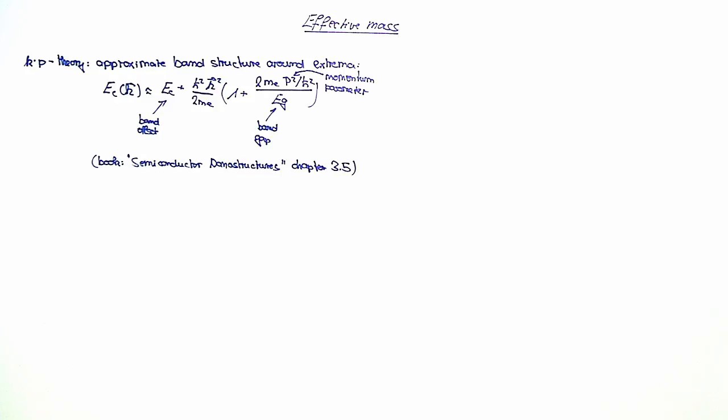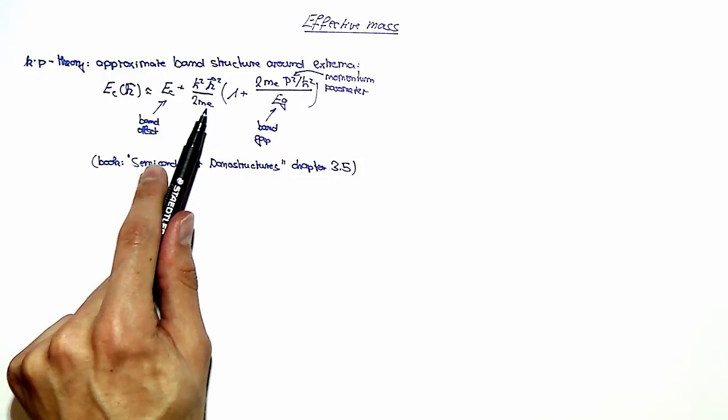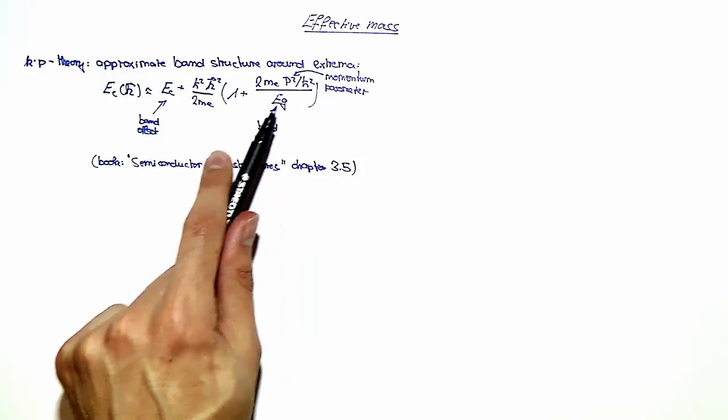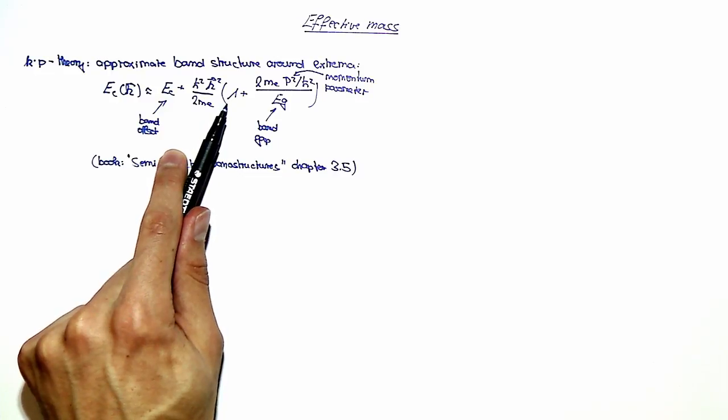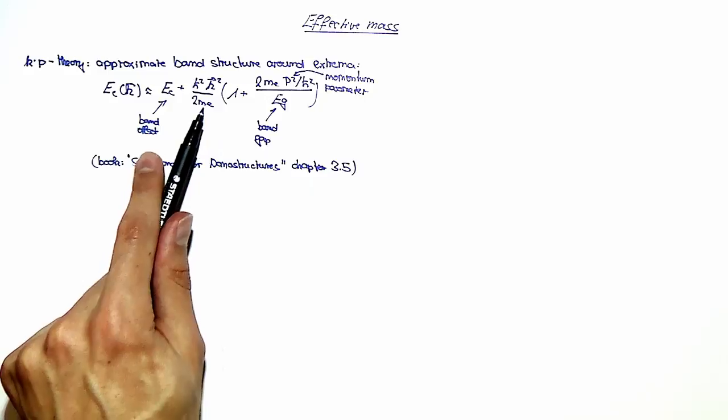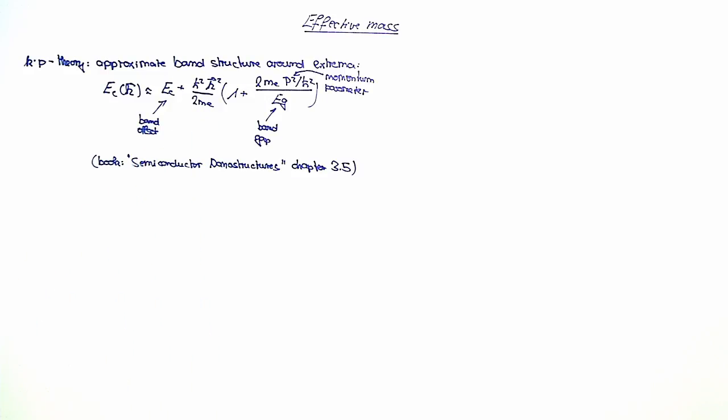So one can see that by comparing this to a free electron dispersion, the only difference is basically this factor here. And so what one does is to incorporate this factor here into the electron mass, such that one obtains an equation for an effective electron mass, which looks as follows.